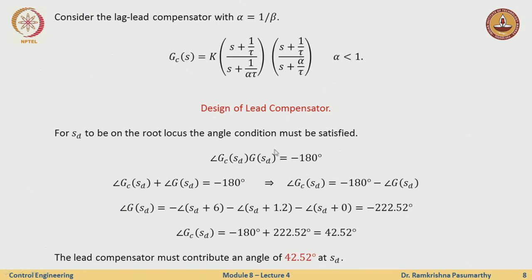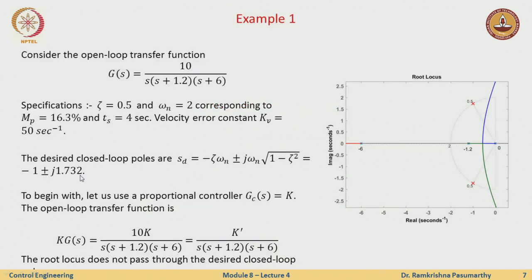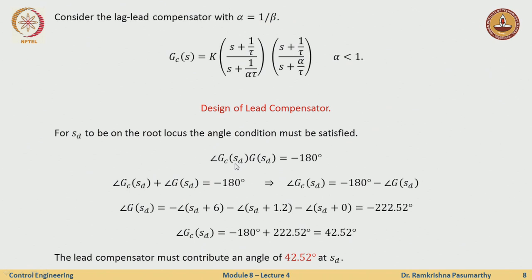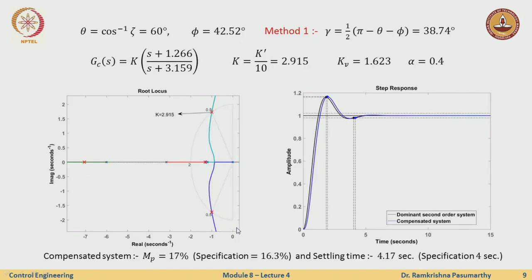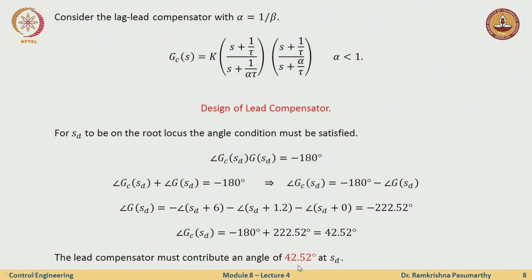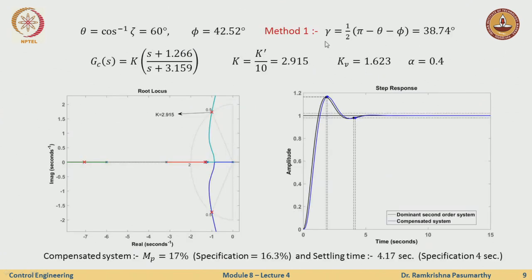The first step is to design the lead compensator. For the root locus of the closed-loop system to pass through the desired poles Sd, the total angle contribution of the plant and compensator at Sd must equal −180°. From the computations, the angle that the compensator must contribute is 42.5°. There are several pole-zero pairs that could achieve this, and the best one is computed from the gamma angle as we derived previously.